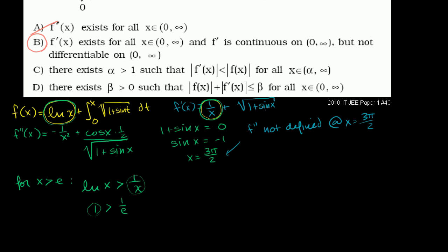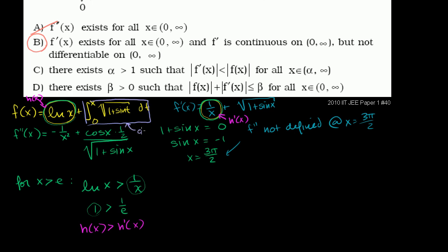Now let's find a threshold for the second part. If we can, we just pick the larger of the two thresholds, and above that f of x will always be larger than f prime of x. Let me define h of x as natural log of x, so h prime of x is 1 over x — and we've already shown that for x greater than e, h of x is greater than h prime of x. Now let me define g of x as the definite integral from 0 to x of the square root of 1 plus sine of t, dt. Its derivative g prime of x is the square root of 1 plus sine of x.